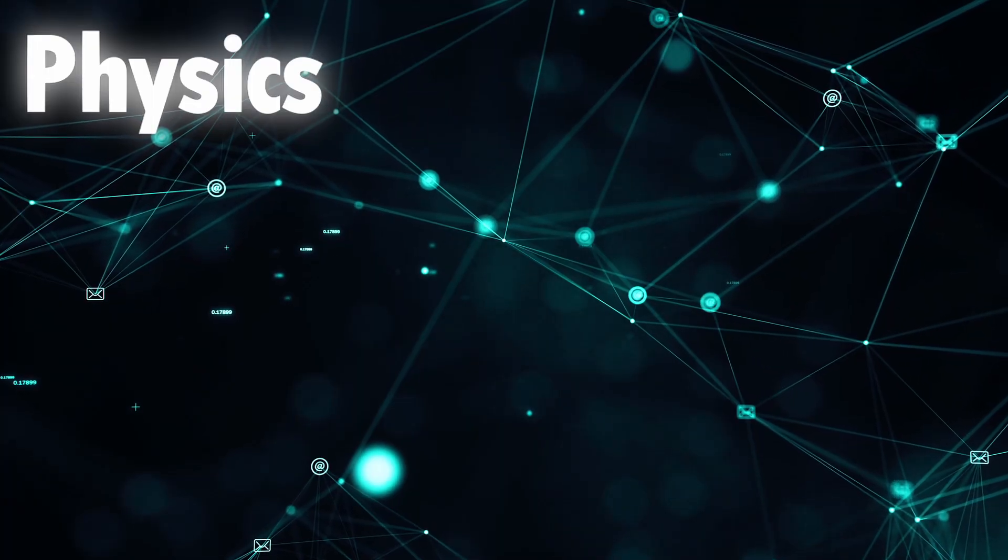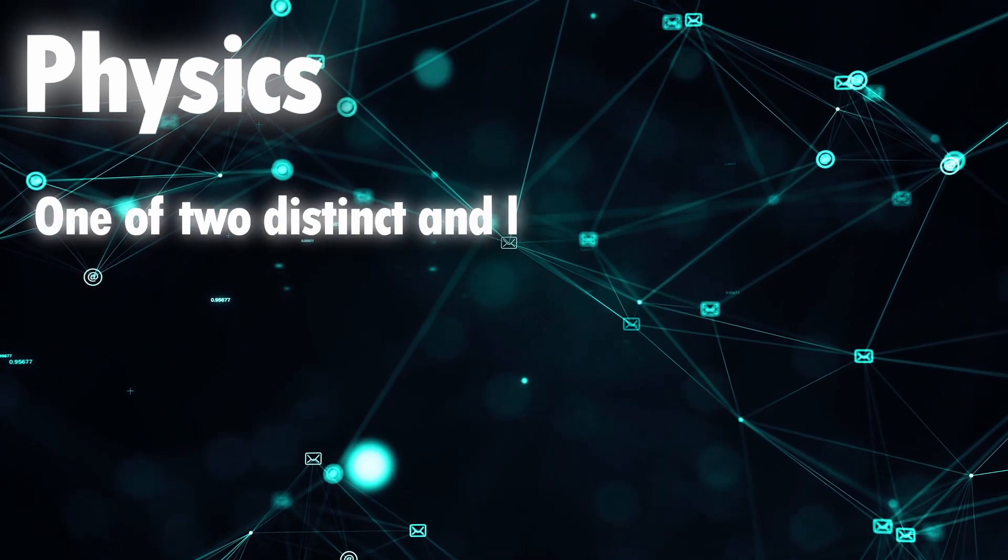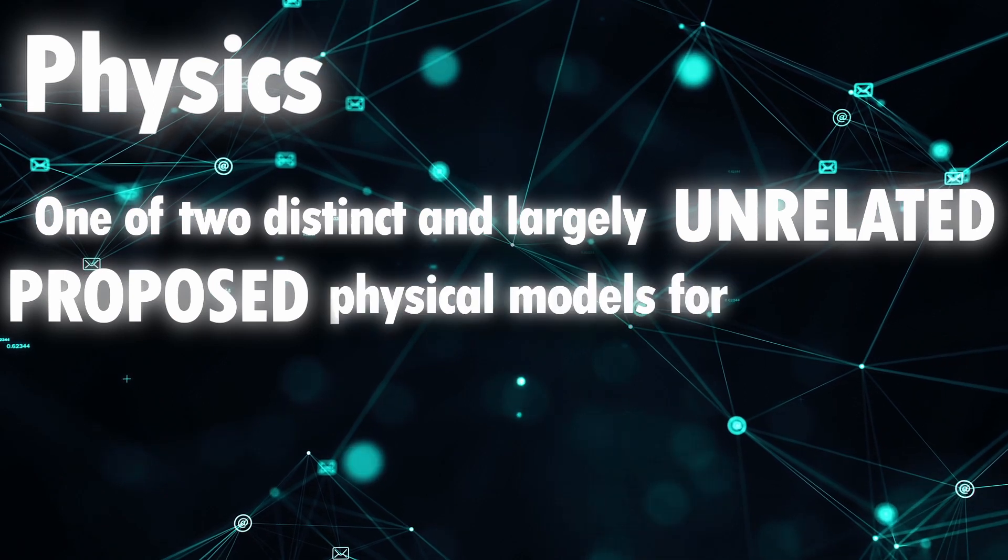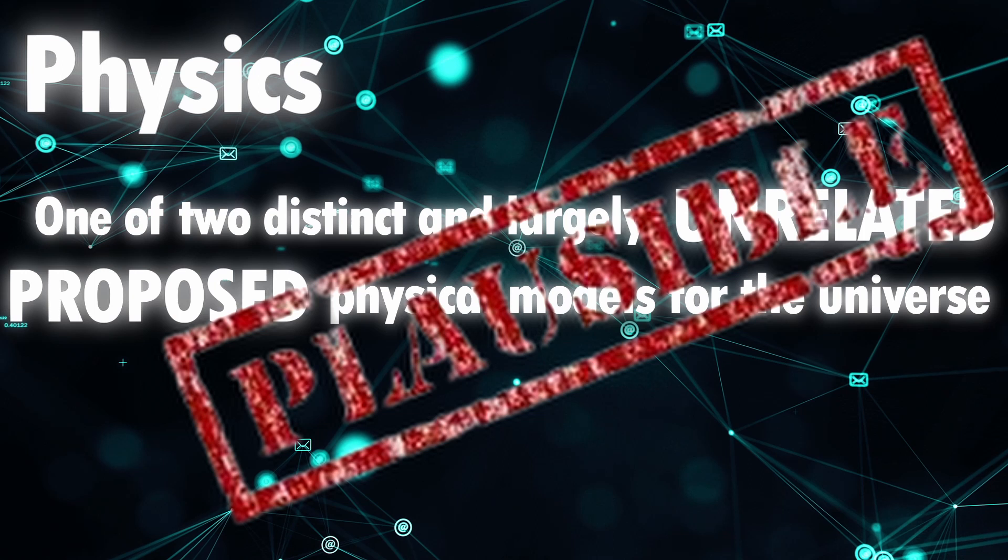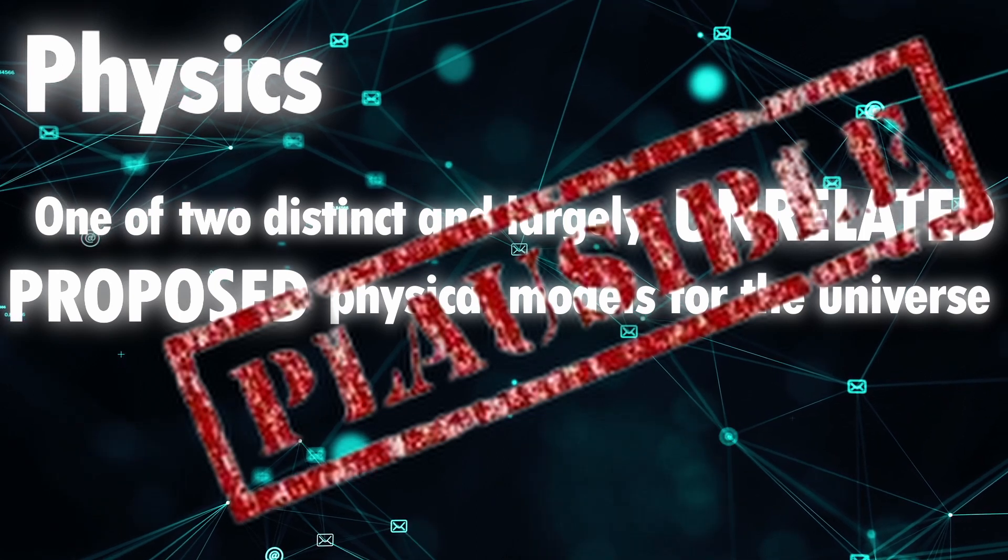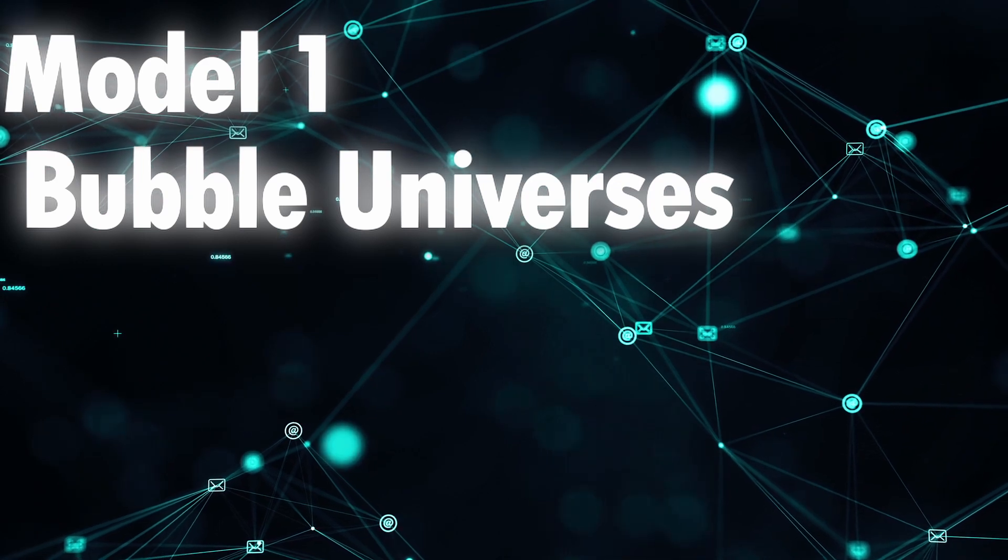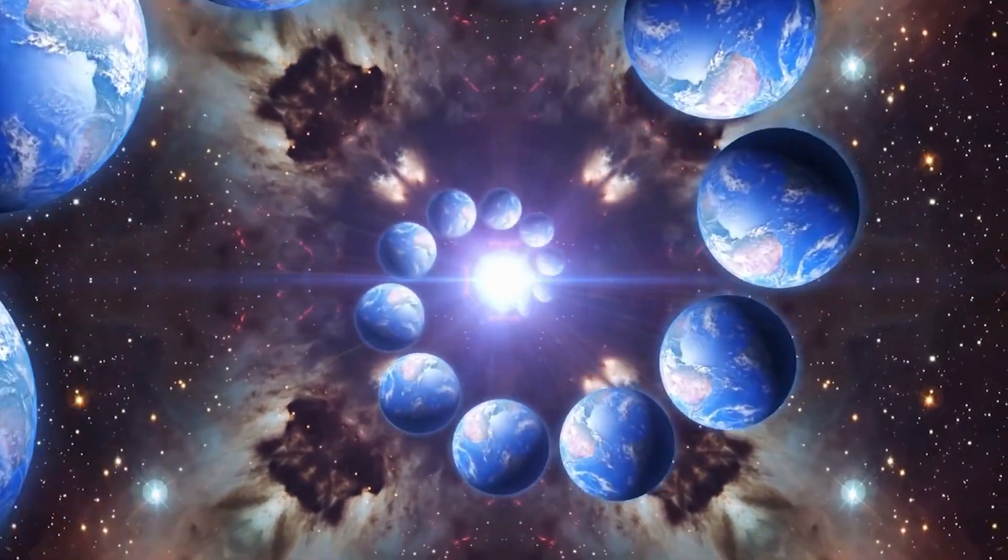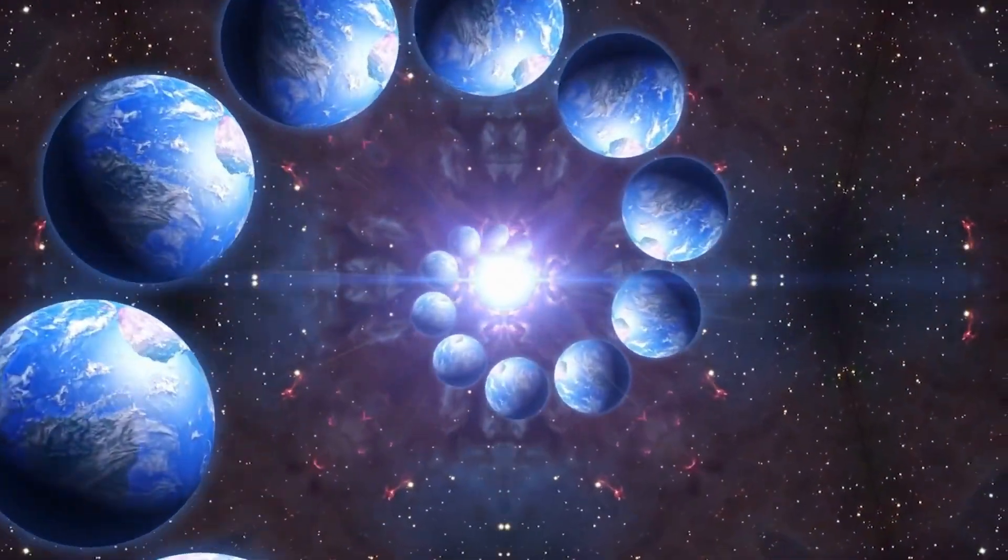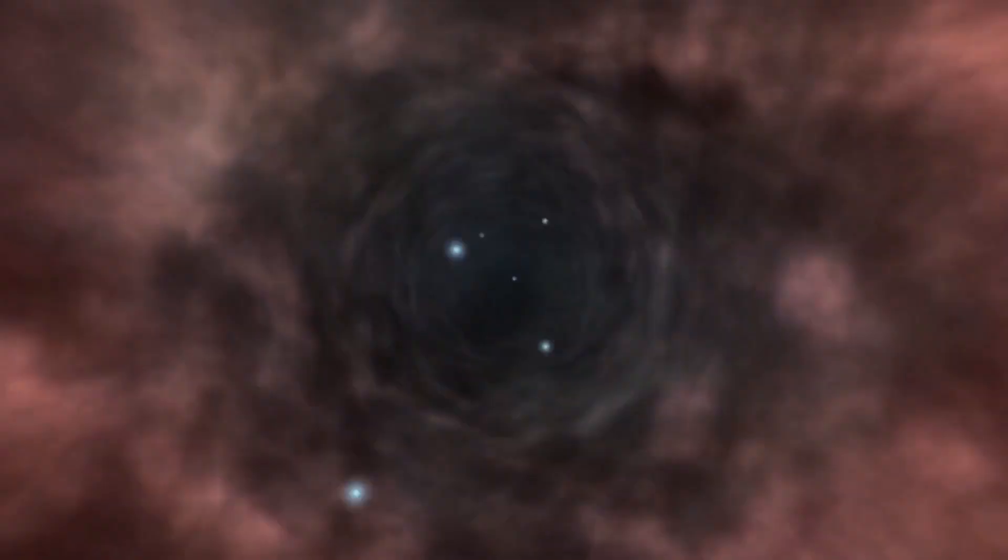In physics, the word multiverse normally refers to one of two distinct and largely unrelated proposed physical models for the universe, none of which have been tested or confirmed with expertise. Multiverse model number one is bubble universes. This is the most straightforward kind of multiverse. The basic idea is that perhaps there are parts of the universe that are so far away that we will never see them or inside black holes, so similarly we will never see them.